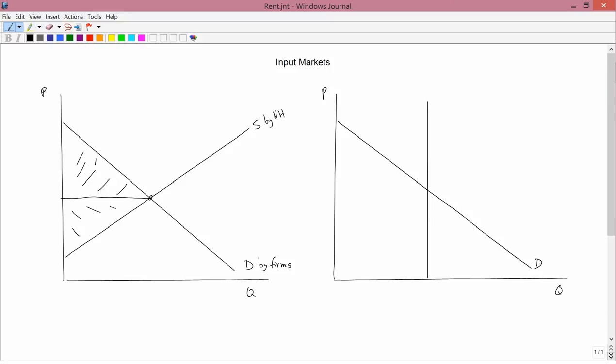This area on top, as before, goes to the demanders. And in this particular case, this is the part of social surplus that goes to the firms, because they're the demanders of the input. And in the other part, this goes to the suppliers of the input.